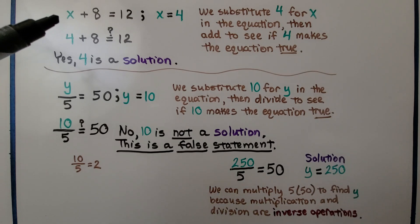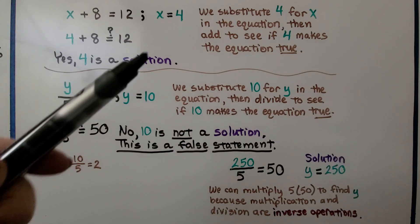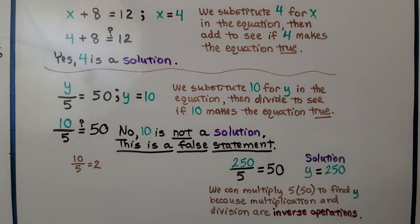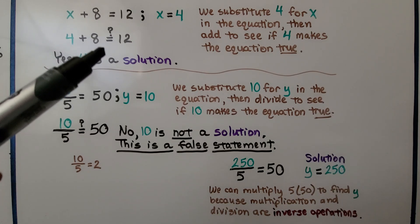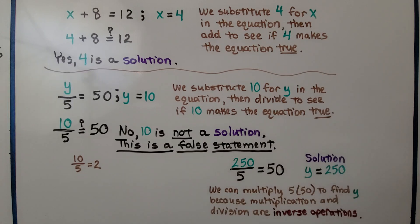Here we have x plus eight is equal to twelve, and we have x is equal to four. We substitute four for x in the equation, then add to see if four makes the equation true. Four plus eight, is it equal to twelve? Yes, it is. So four is a solution.